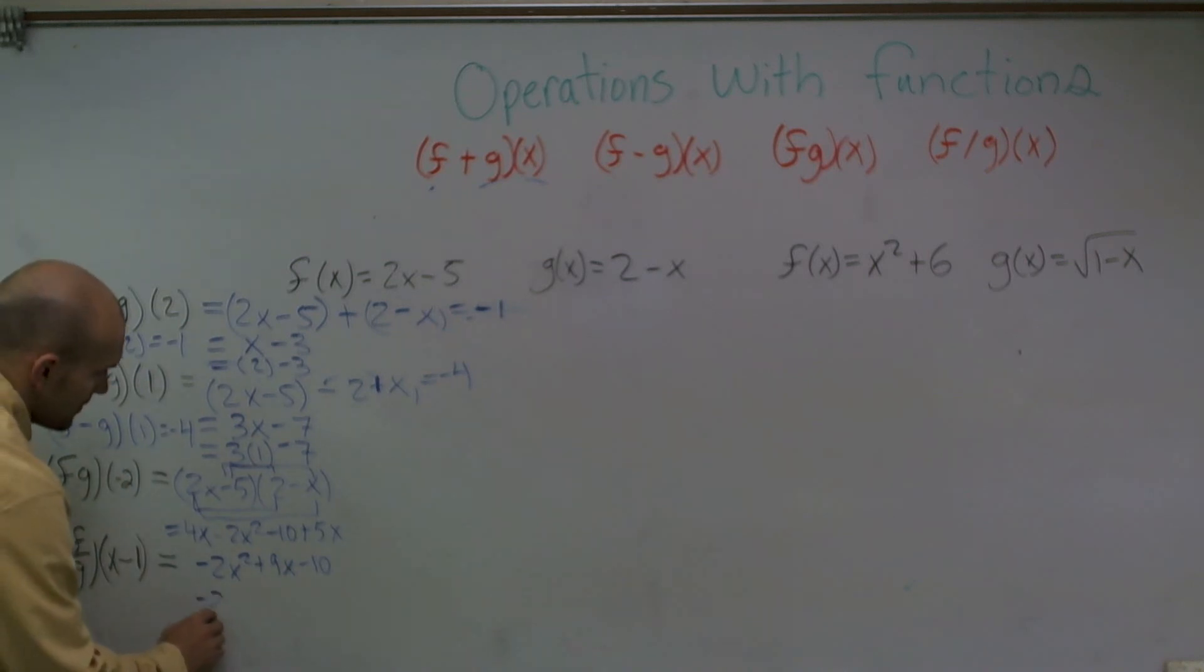Then I evaluate it for negative 2. Okay, so negative 2 squared is 4. 4 times negative 2 is negative 8 plus 9 times negative 2 is negative 18 and negative 10. So I really have negative 8 minus 18, which is negative 26 minus another 10, which would be negative 36. So I can say f of g of negative 2 equals negative 36.